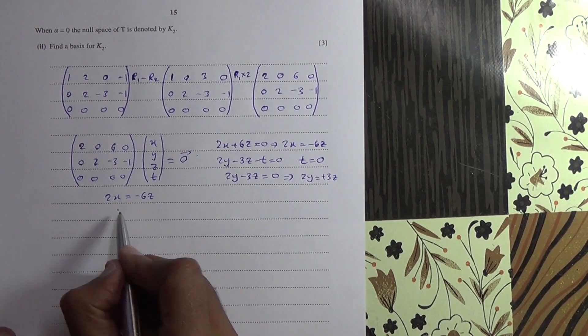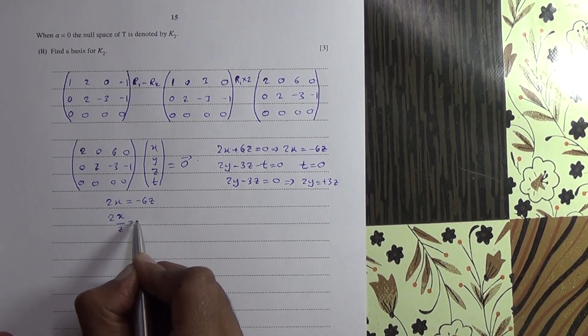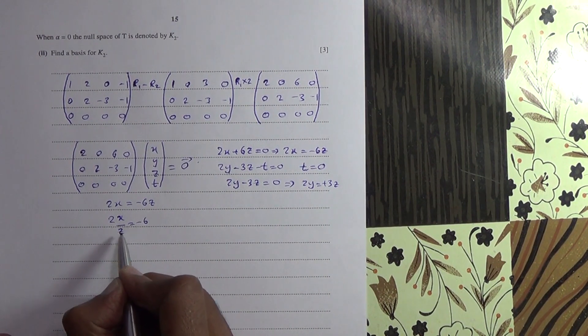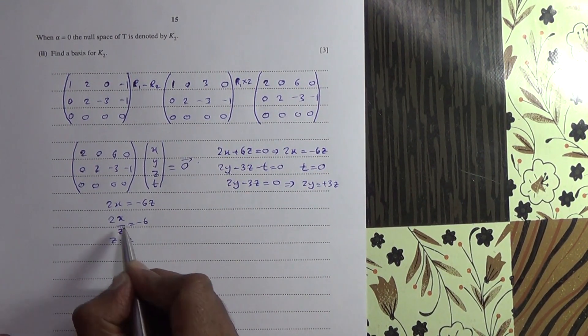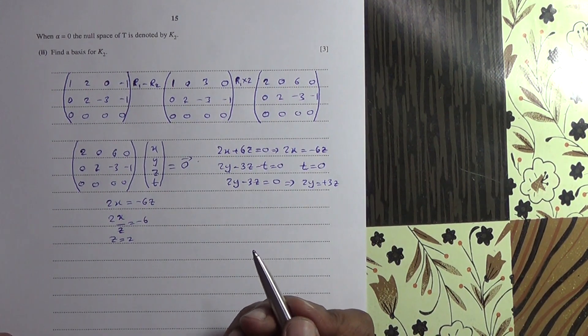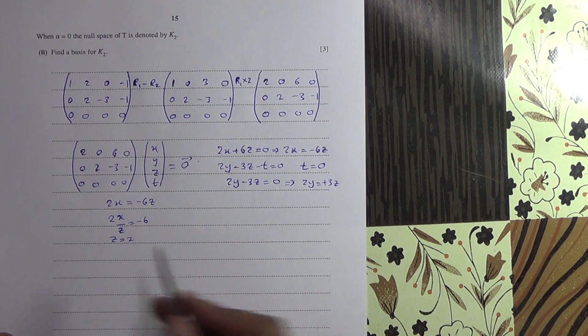So if I bring the z down here, I'm going to get 2x over z is equal to minus 6. Basically, z can equal to 2, because 2 divided by 2 is 1, minus 6. So that is one value that z can take, yes.